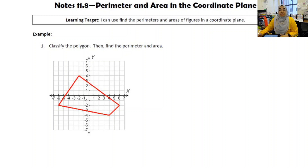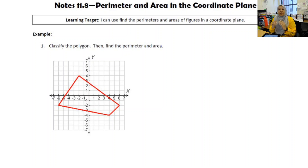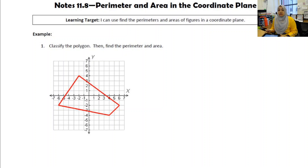Our last lesson for plane figures is finding perimeter and area in the coordinate plane. This is different because we're not given any values for the lengths of the sides. We're going to use the coordinate plane as a ruler to find the lengths of the sides, and then find the areas of these figures as well as the perimeter.